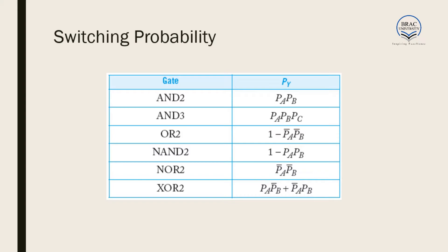Let us look at switching probabilities for common logic gates. For a 2-input AND gate, the output probability is P_A × P_B; for a 3-input AND gate it is P_A × P_B × P_C. For an OR gate: 1 − P_Ā × P_B̄. For a NOR gate: P_Ā × P_B̄. For an XOR gate: P_A × P_B̄ + P_Ā × P_B. These switching probabilities are needed to measure the activity factor.